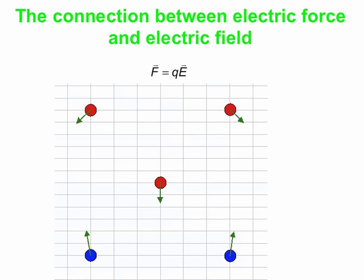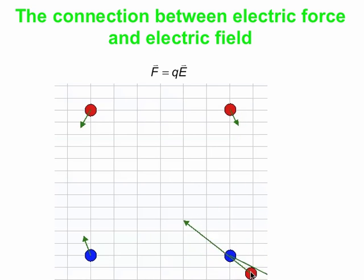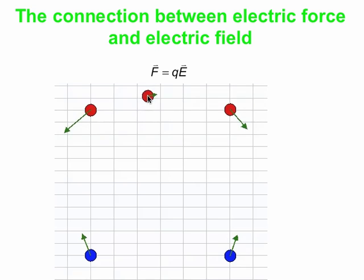Now we're going to animate this a little bit and see what happens. We're going to change the charge in the middle from positive to negative, and you see now the force goes up. The field is still down, but the force on the negative charge is in the opposite direction of the field. Now we make the charge positive again, and we're going to drag it around and just sample the field everywhere. As we drag that charge around, the arrows on all the other charges change as well, because dragging that charge changes the field experienced by all the other ones.